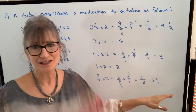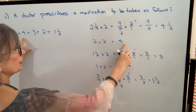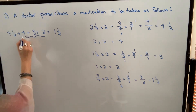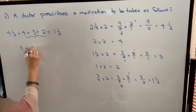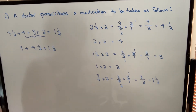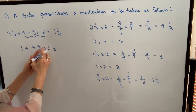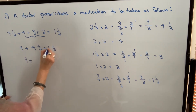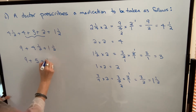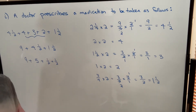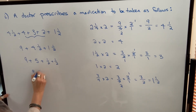Now to find our total, let's add: four and one half plus four plus three plus two plus one and one half. Add the whole numbers: four plus three plus two is nine. Then for four and one half plus one and one half, add the whole parts — four plus one is five — and add the fractions: one half plus one half is one. So nine plus five plus one is a total of 15 tablets.